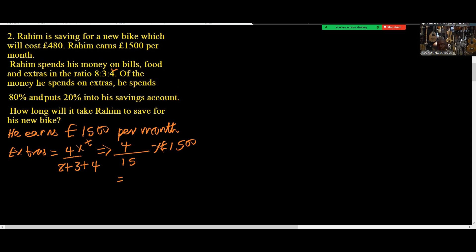This is easier to divide. We have 15 here and 15 here, that's 100. So that means 4 times 100 equals £400. That is the extras.